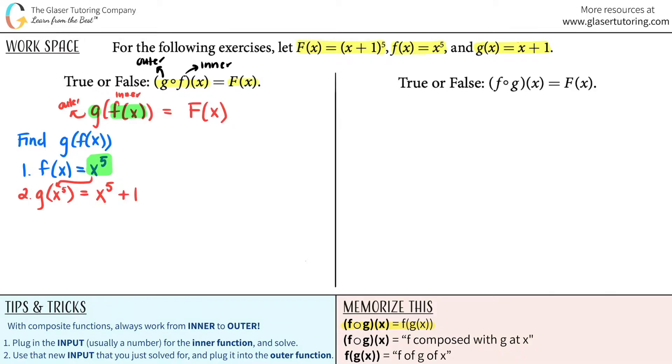Okay. So now this is basically the same thing as saying G of F of X. And now we're ready to see if they're equal to each other. Does G of F of X equal the capital F function? Well, G of F of X was X to the fifth plus one. The F function is this function, right? It's X plus one raised to the fifth. Does this equal or does this not equal?